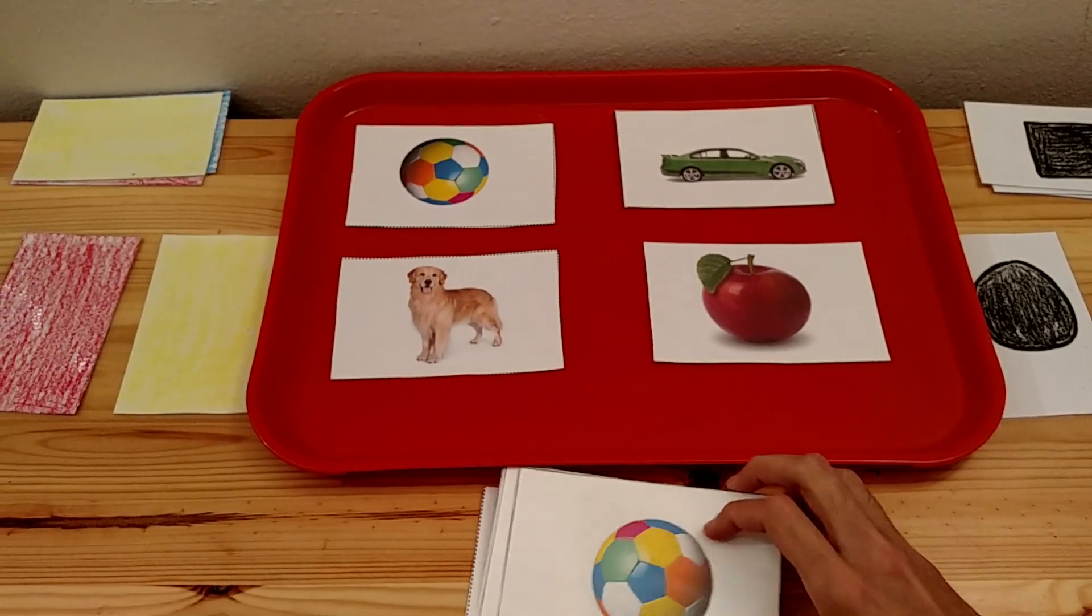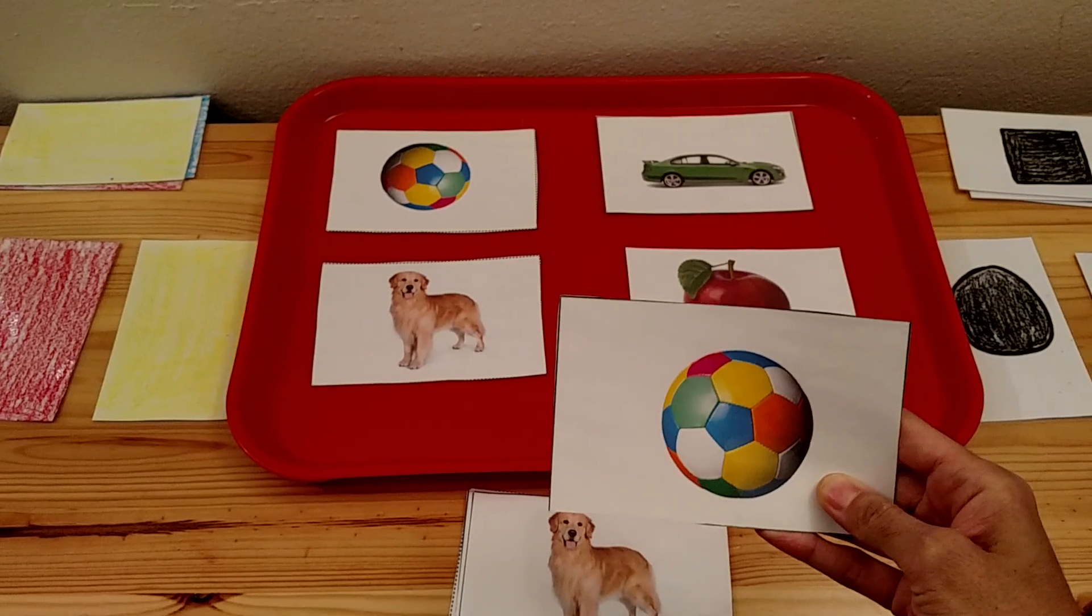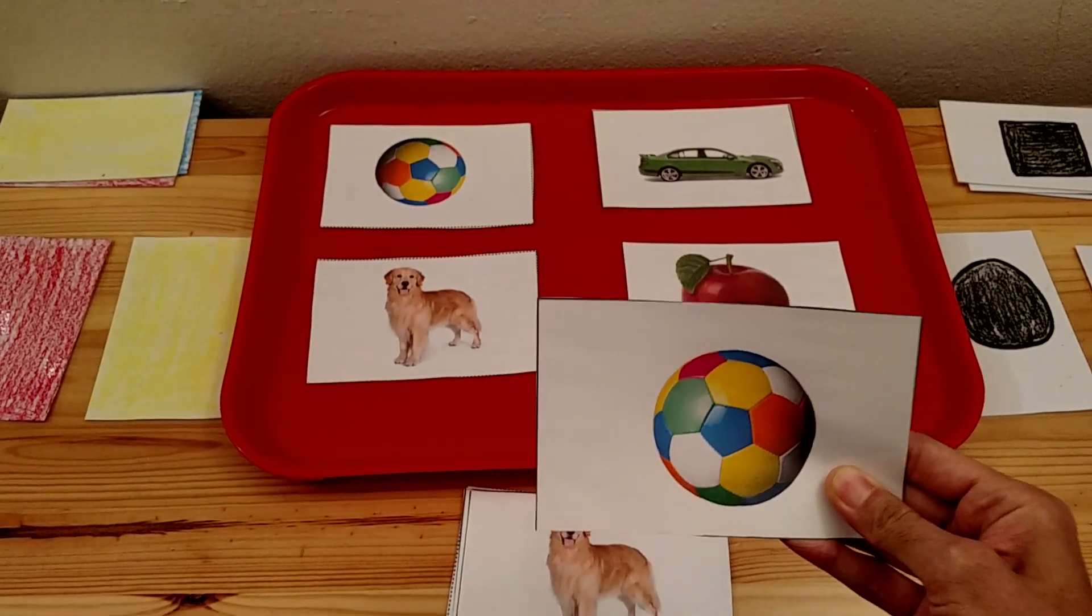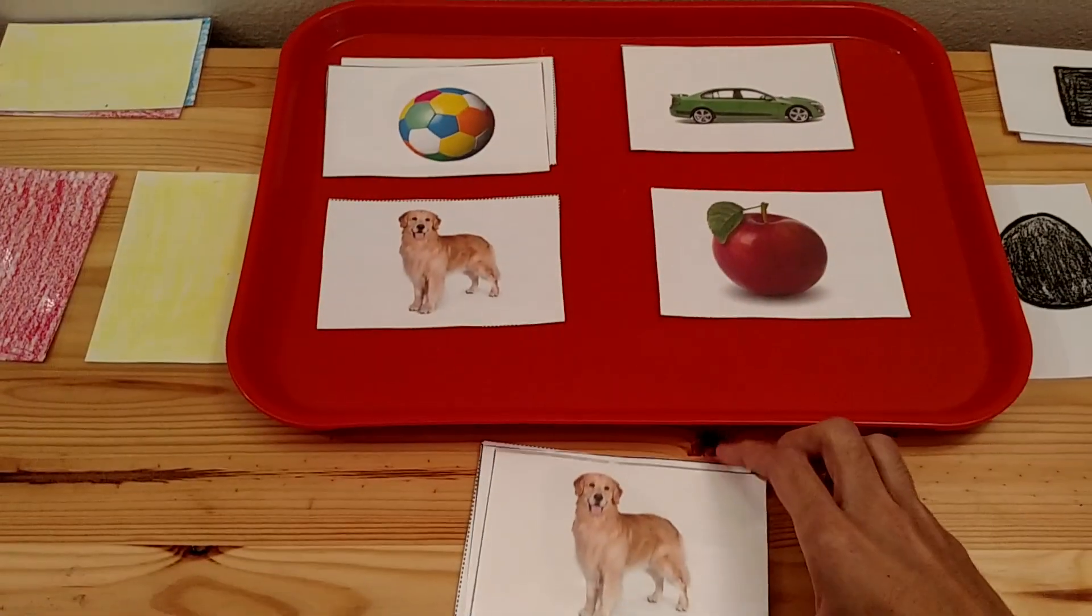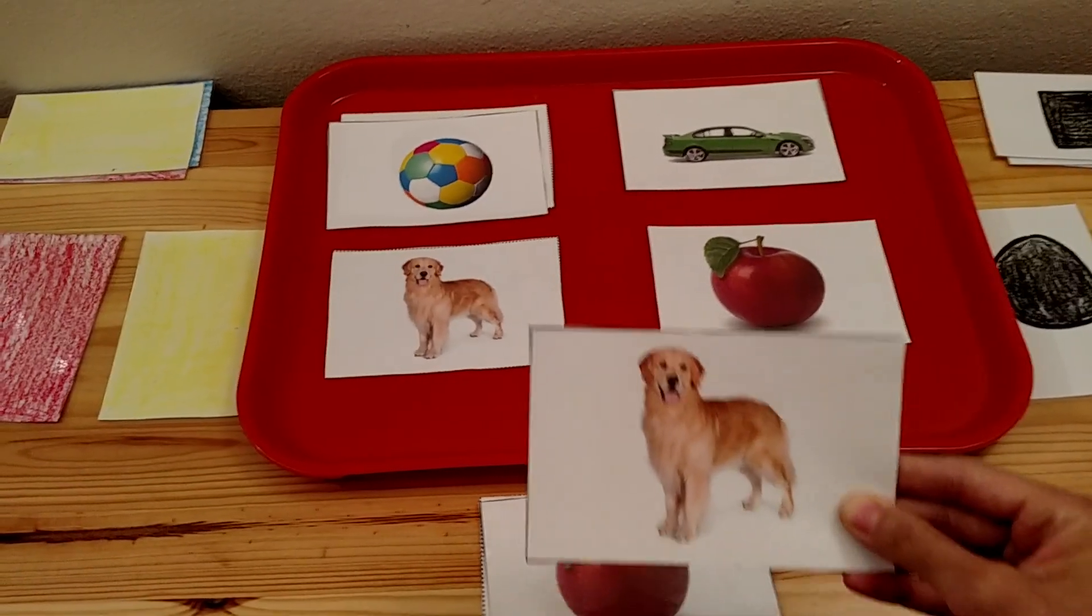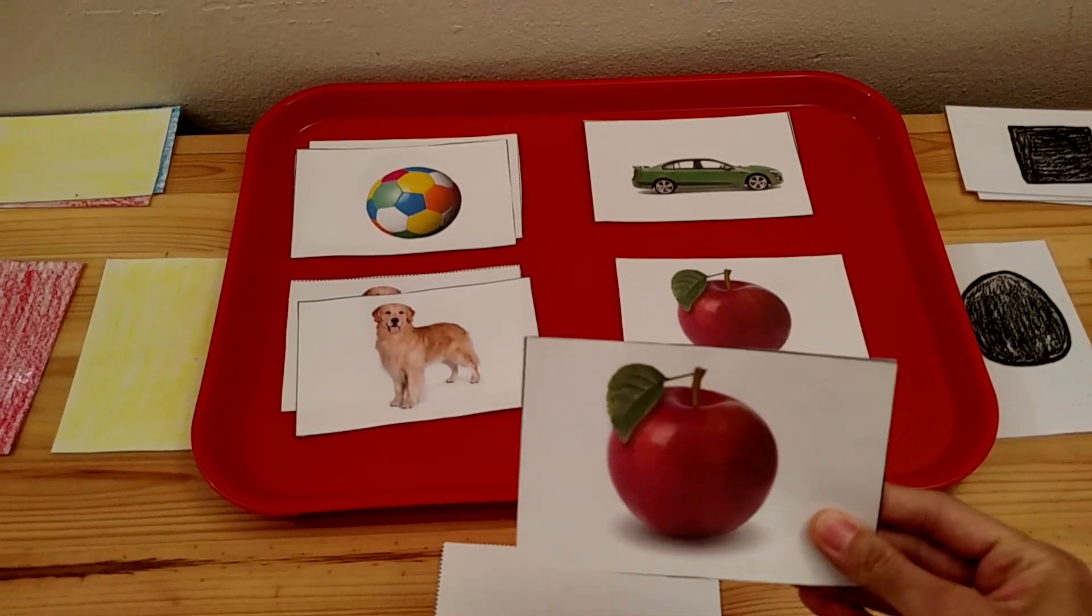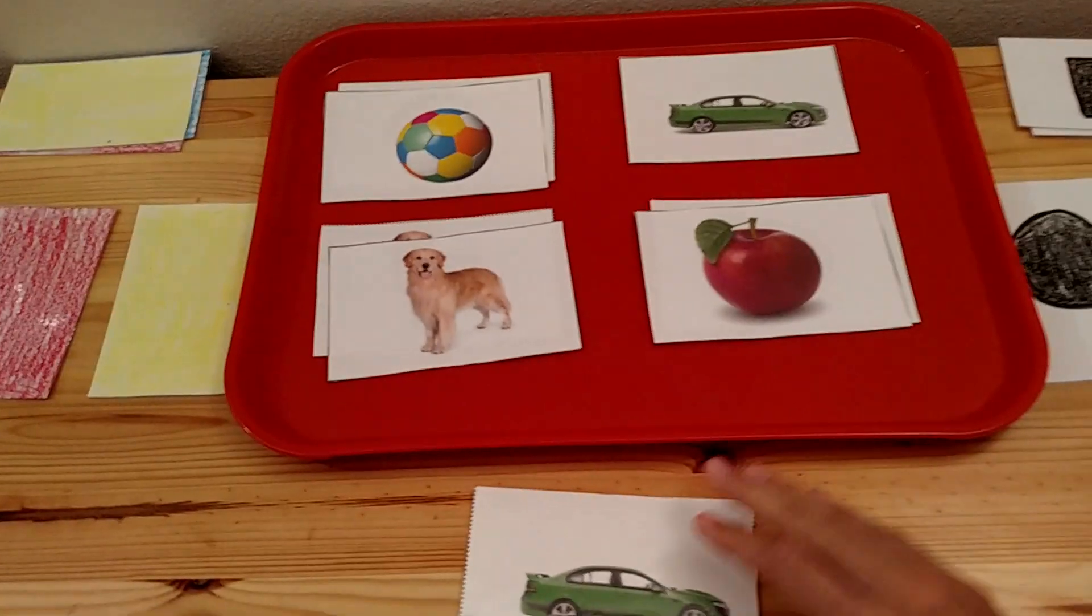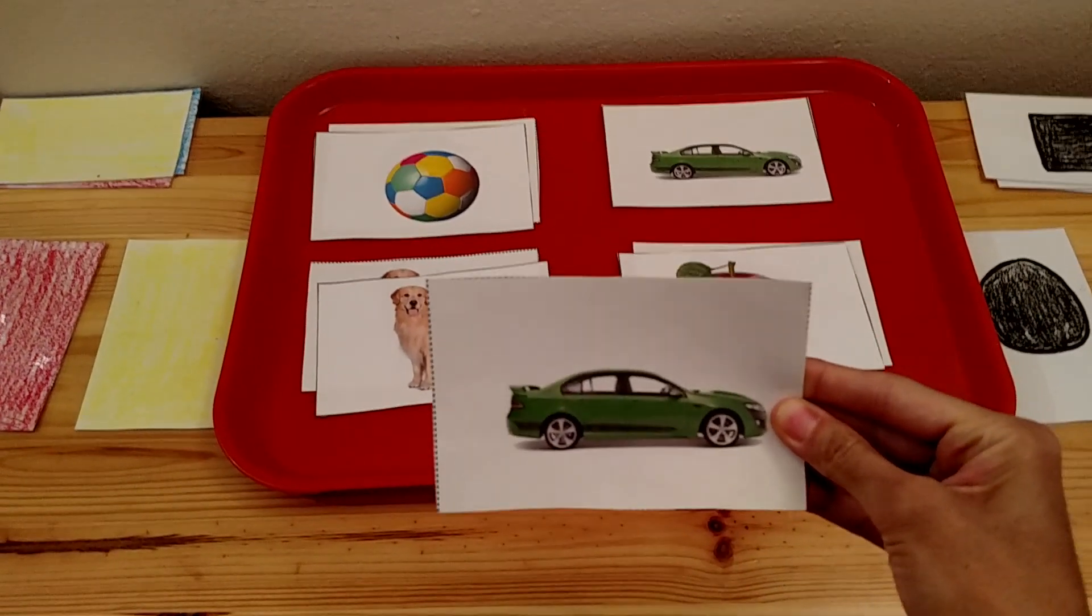Then you want to move on to matching. Give them the card and say, This is a ball. Can you find the ball? Can you put this on the ball? Where is the ball? Dog. Can you find the dog? Apple. Can you find the apple? Car. Can you find the car?